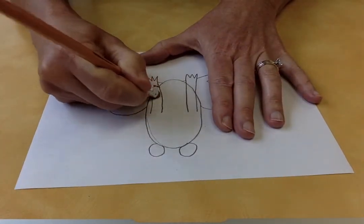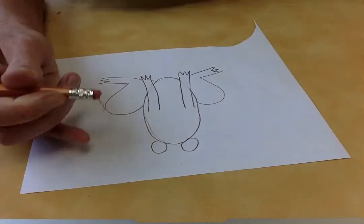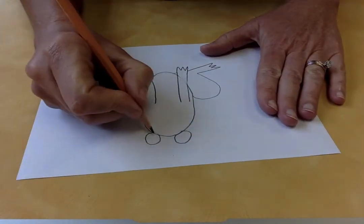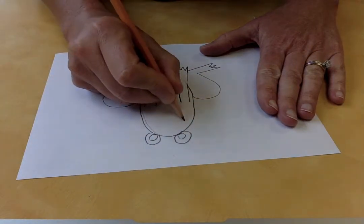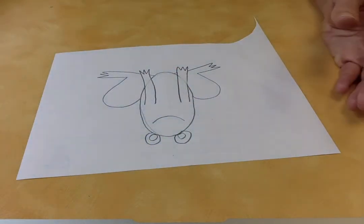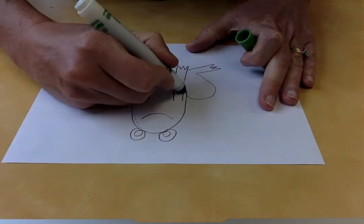Now I'm gonna erase some of these lines I don't need, like that one. And if you were drawing lightly, this would be super easy. And I'm gonna put some eyeballs and a big smile.